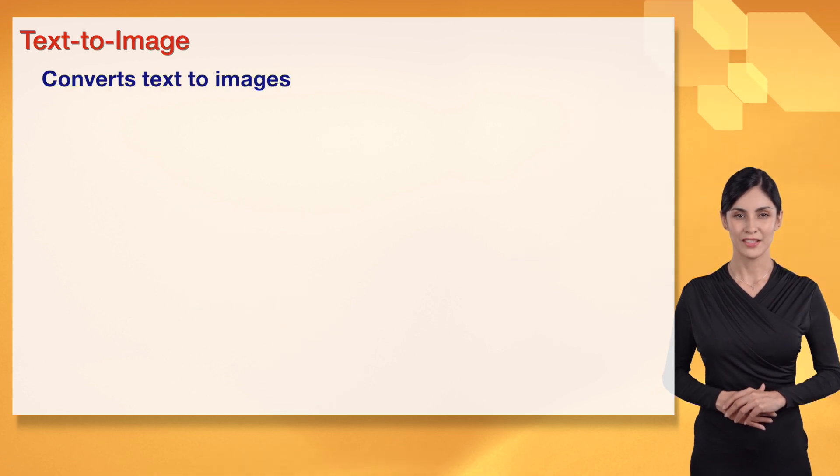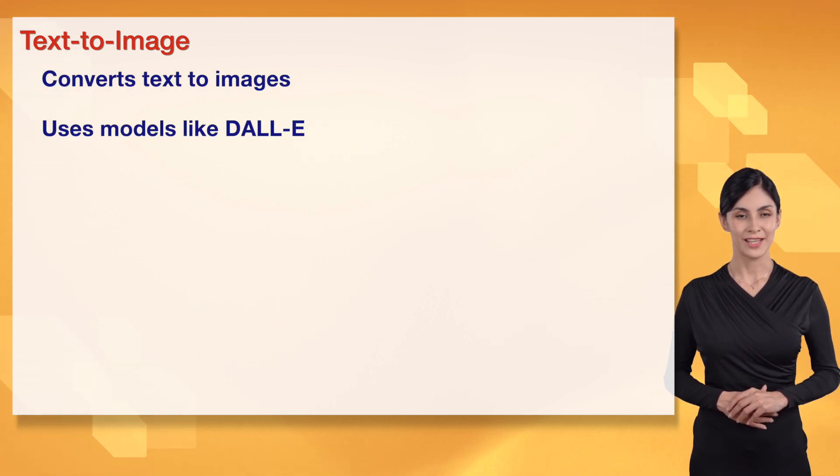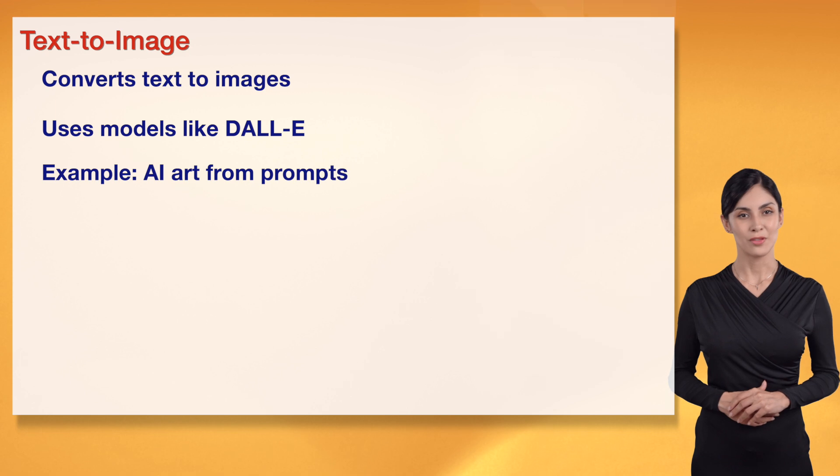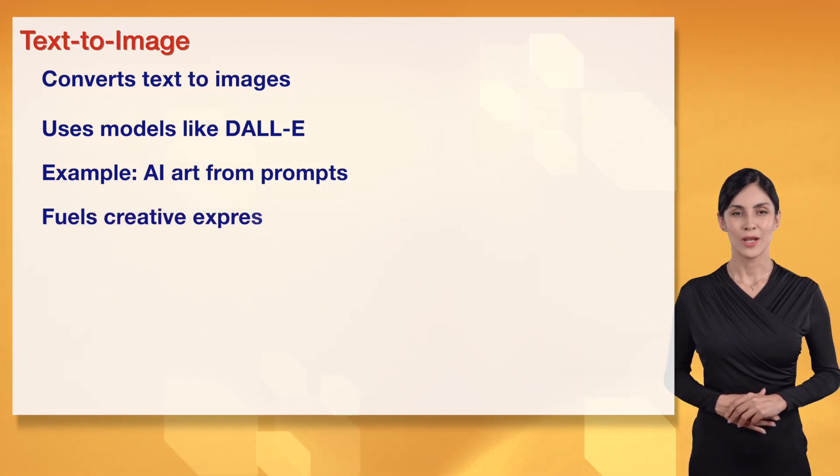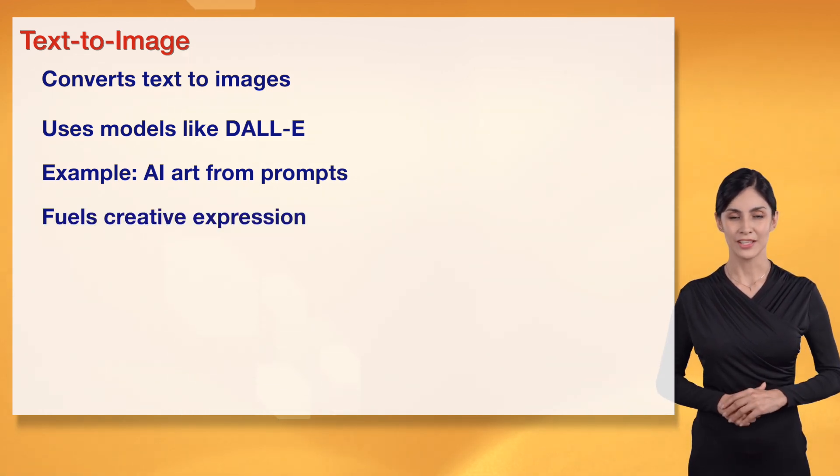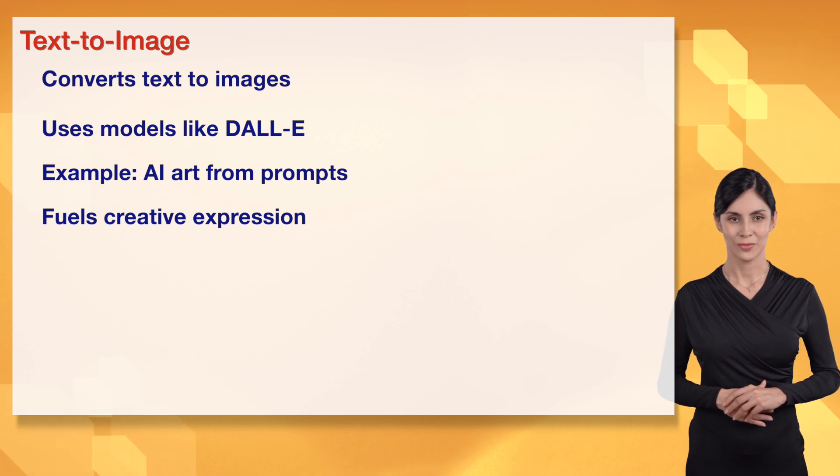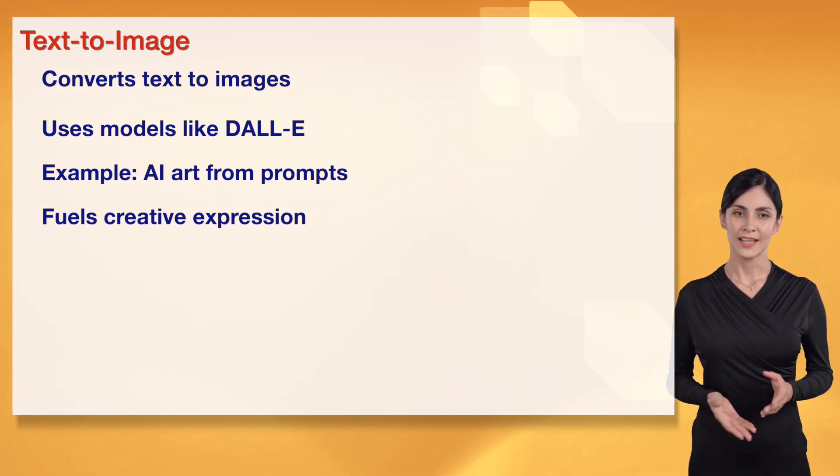GANs in text-to-image are mind-blowing. They convert text to images using models like DALL-E, creating AI art from prompts, fueling expression. This is imaginative AI magic. I'm so excited to explain. Let's turn text to art. This sparks creativity.